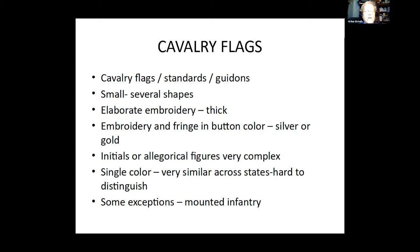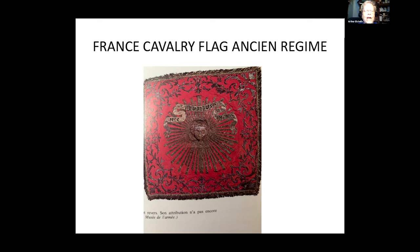Cavalry flags during the Age of Lace were small, coming in several shapes — square, tapered, swallow-tailed. They were very elaborate, thick, embroidered, and had a fringe — the fringe was in either silver or gold, which we'll refer to as the button color. They had initials and allegorical figures on them. They were very complicated and hard to distinguish at any distance, often a single color that changed from regiment to regiment.